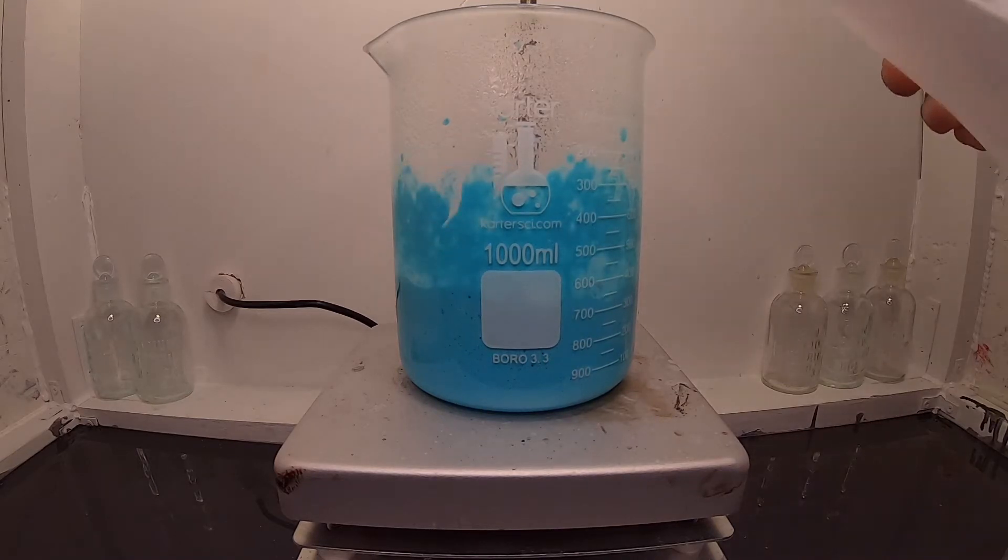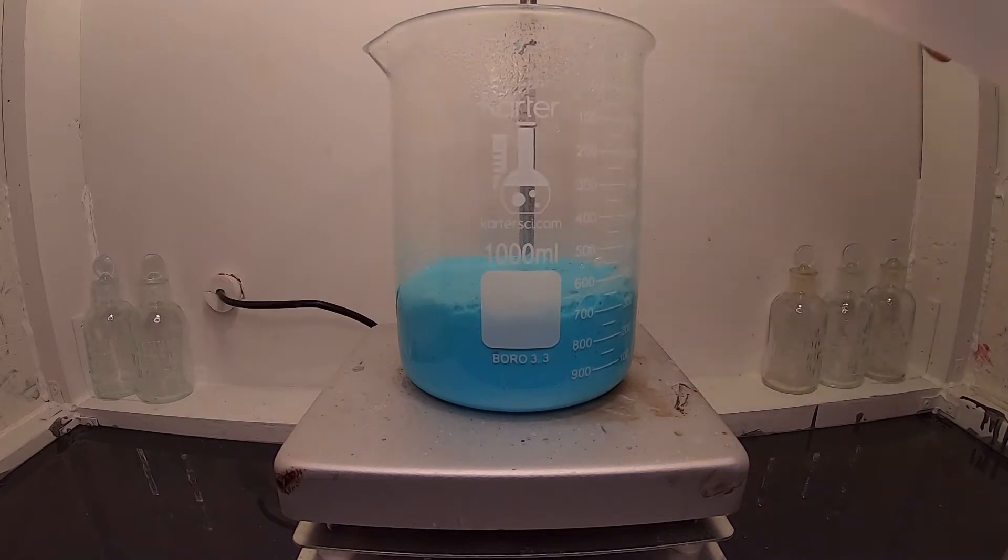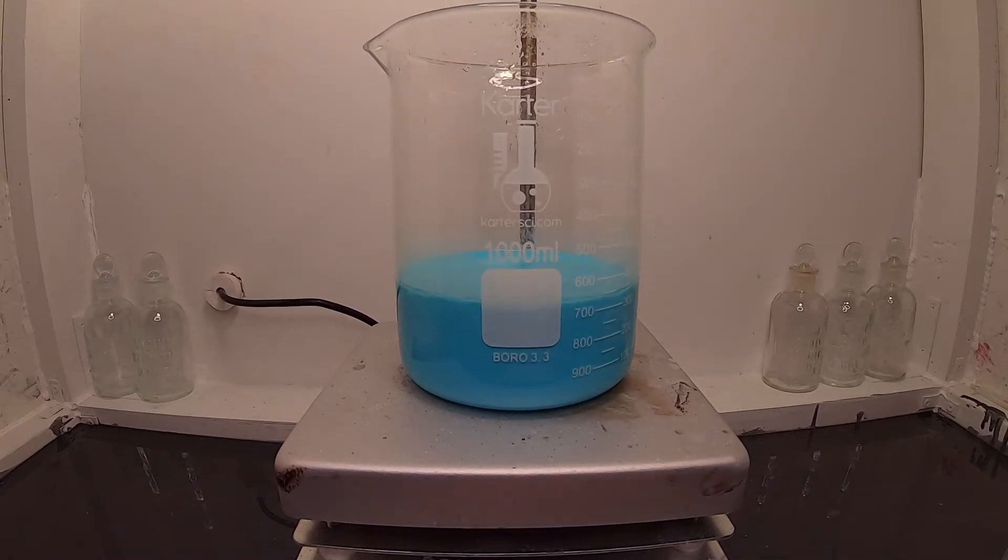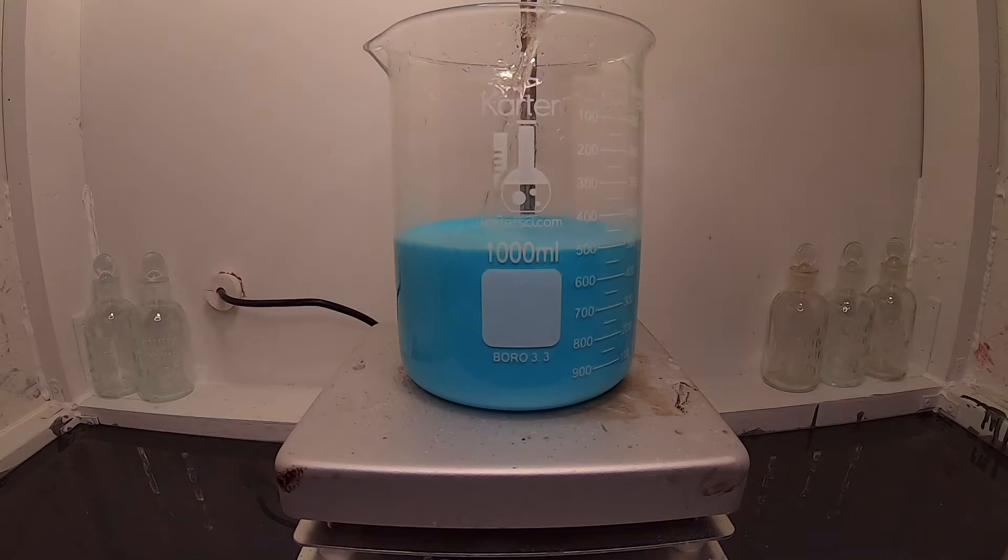The beaker is rinsed a few times to clean things up and cool it down. This is just water. Next, about 150 milliliters of extra water is added, which helps dissolve the excess sodium sulfate.